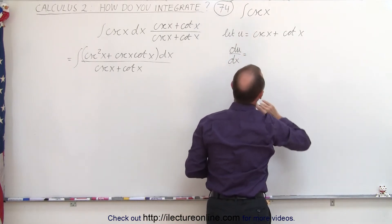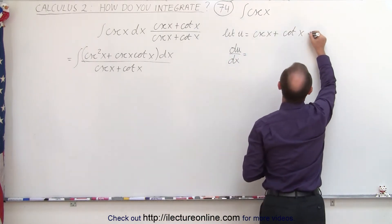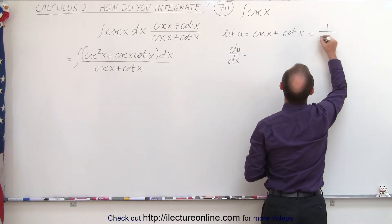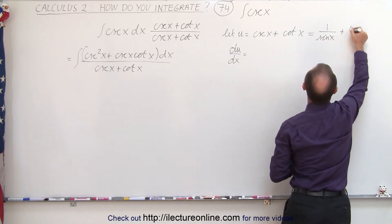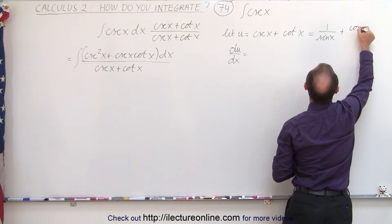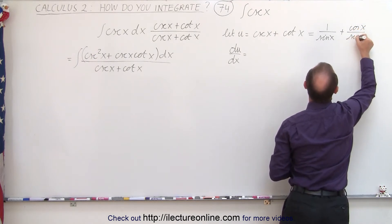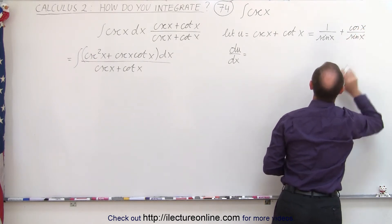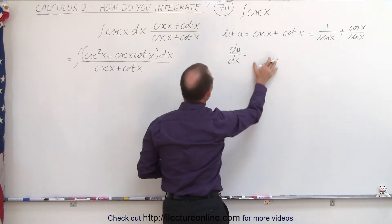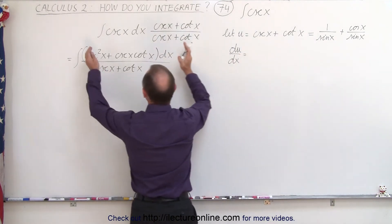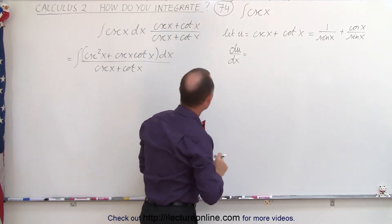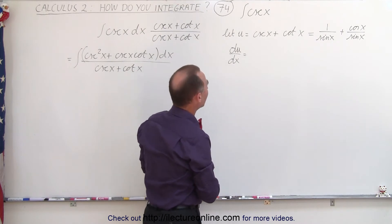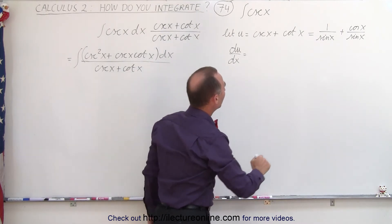Well, du would of course be the derivative of this. If we rewrite this as 1 over sine of x plus cosine of x over sine of x, and then we take the derivative of these, you'll find out that what we end up with is almost the numerator. I think we might be off by a negative sign. Let's find out.